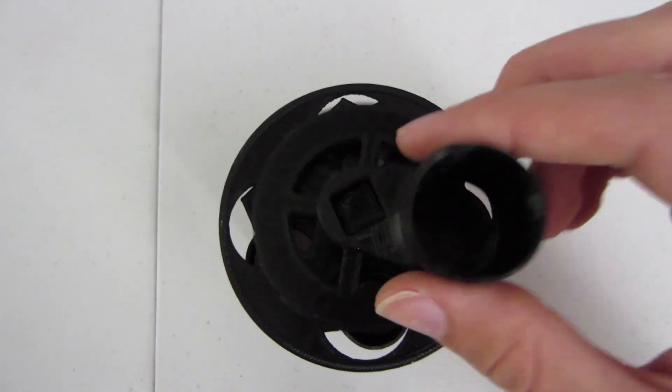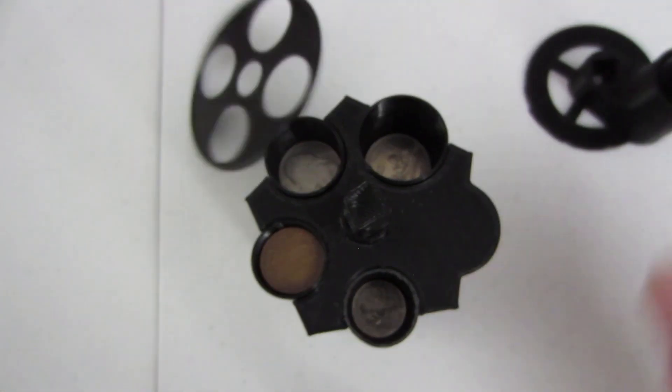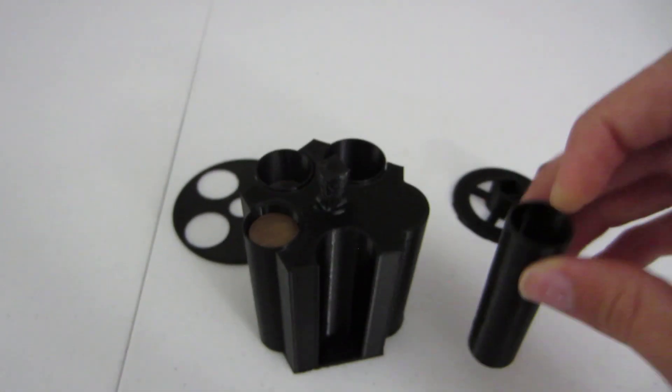Once you're done with all your coins all you do is remove the two top pieces and then the sleeves can be taken out and stored.